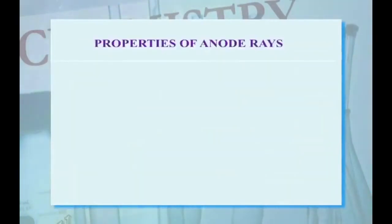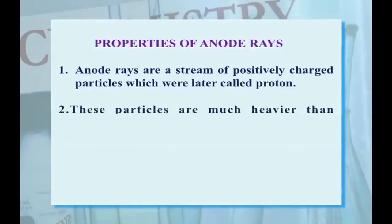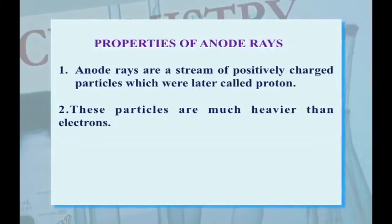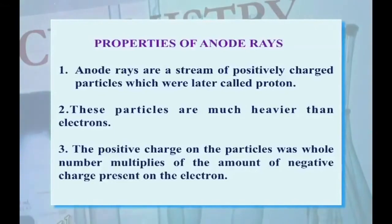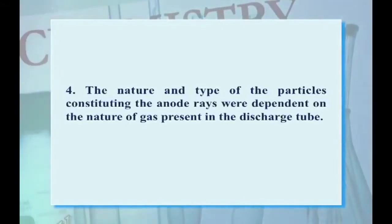Properties of anode rays: First, anode rays are a stream of positively charged particles, which were later called protons. Second, these particles are much heavier than electrons. Third, the positive charge on the particles was a whole number multiple of the amount of negative charge present in the electron. Fourth, the nature and type of particles constituting the anode rays were dependent on the nature of the gas present in the discharge tube.